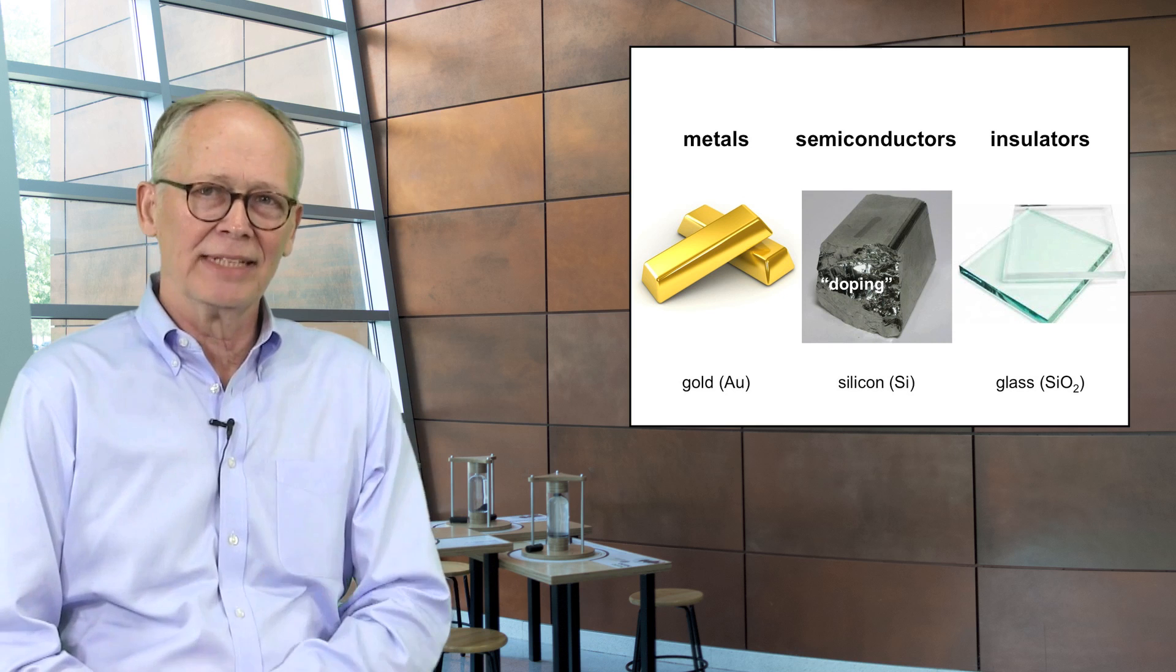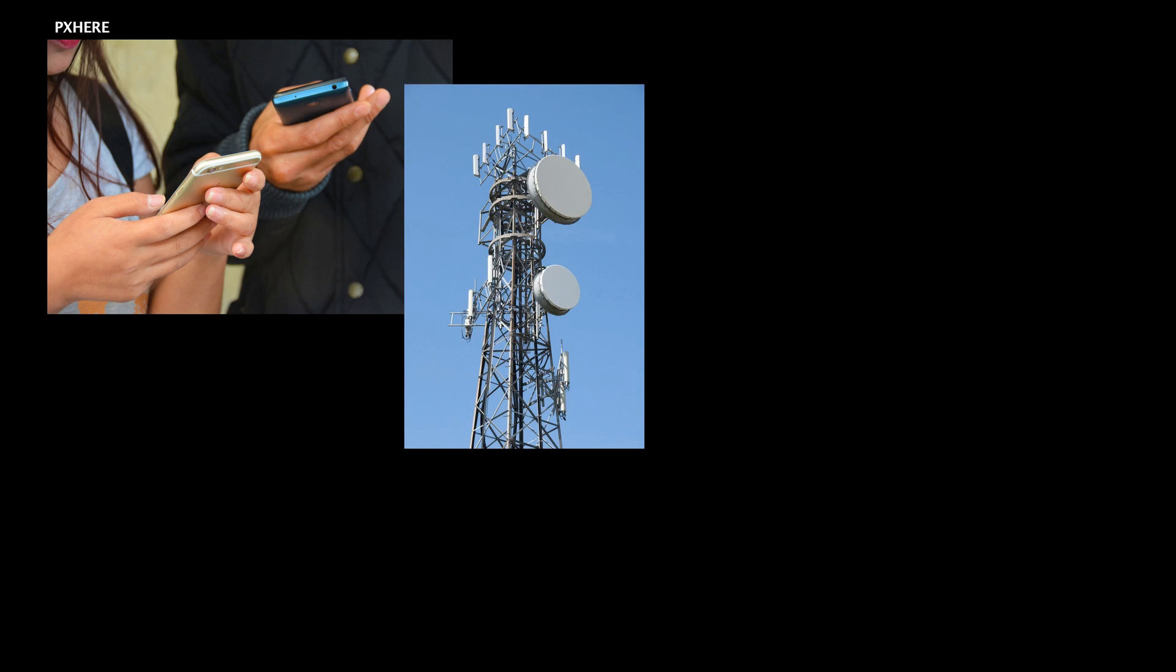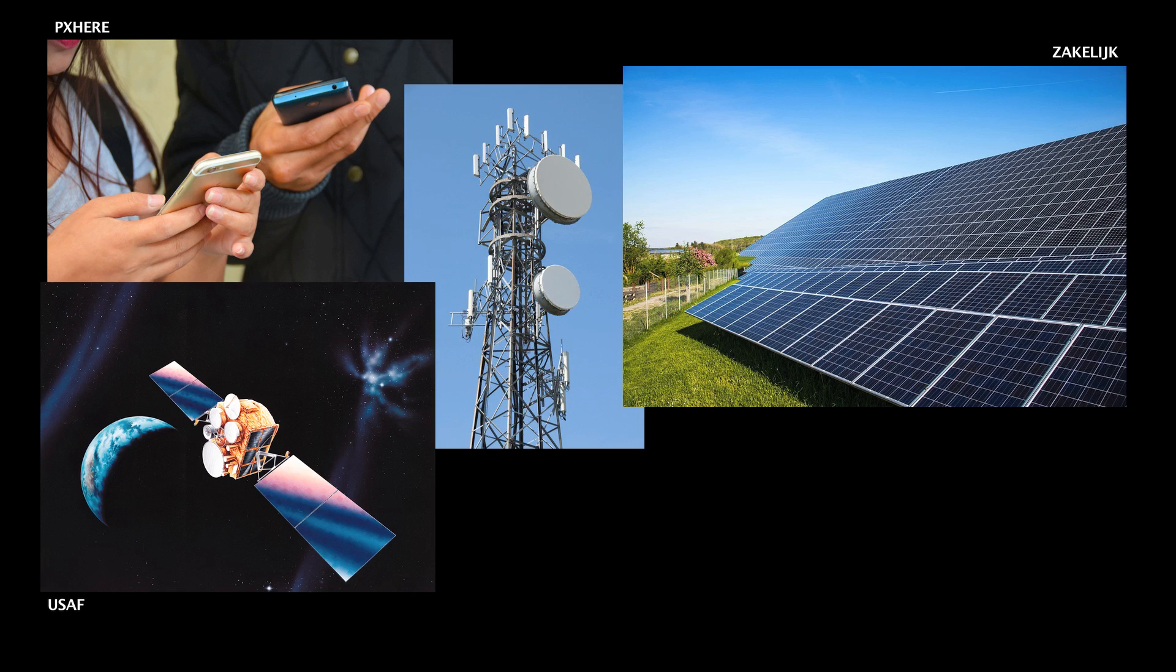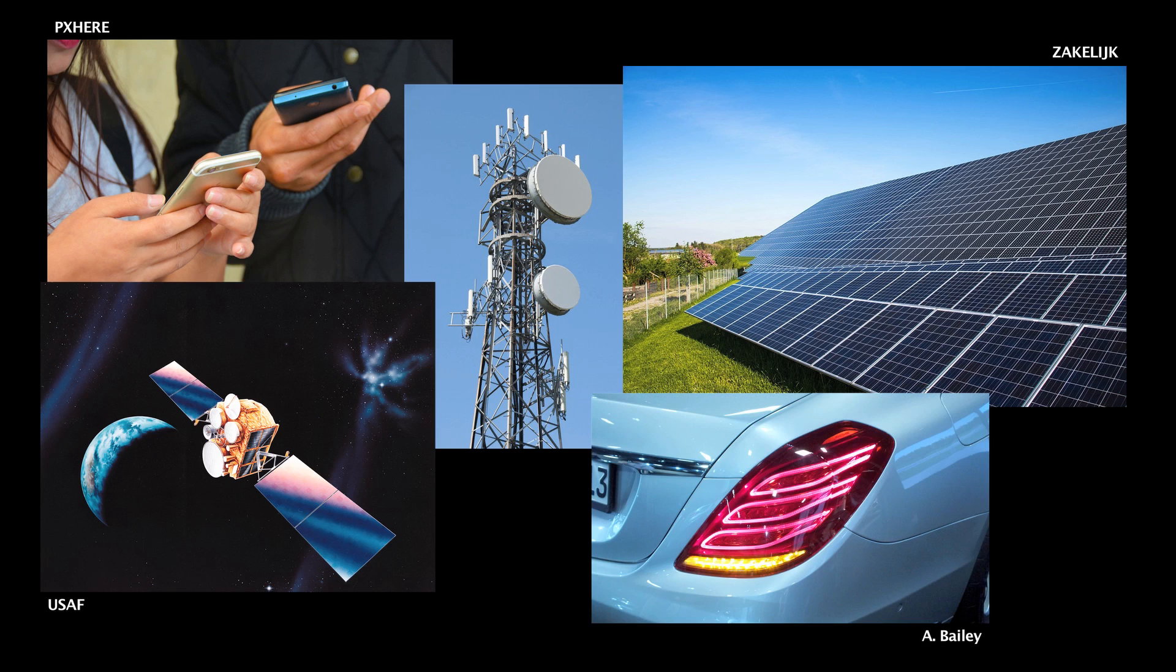And electronic devices are everywhere. They're in the cell phones that we carry around, in the cell phone towers that relay communications, in solar cells that convert sunlight to electricity, in communication satellites that relay signals around the globe, in displays in our headlights and taillights, and all over the place. So semiconductors are everywhere. It's hard to imagine the modern world without them.